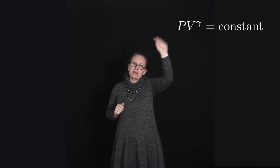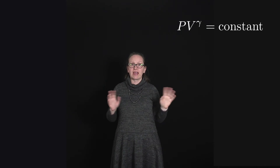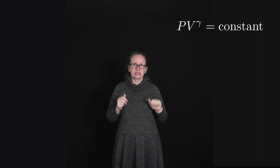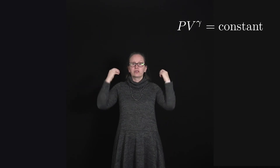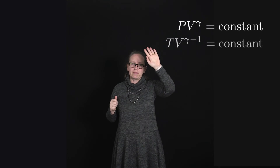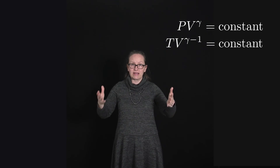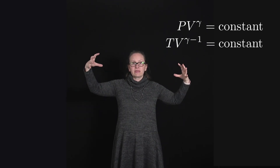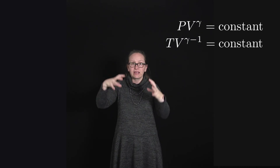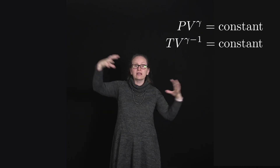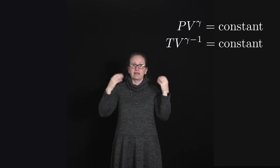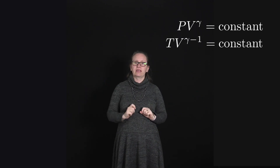We do have a couple of equations that we can write down to describe adiabatic processes. One of these is PV to the gamma, where gamma is some constant which just depends on what type of gas we're discussing, is equal to a constant. And we can also use the ideal gas law to rewrite this as TV to the gamma minus one is equal to a constant. This gives us a relationship between how the temperature changes as the volume changes if a gas is undergoing an adiabatic process. So this tells us that if something shrinks down suddenly and becomes really small, then the temperature has to increase to balance out that decreasing volume. This will be important when we're looking at star formation.